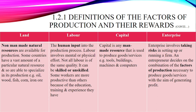Capital refers to man-made resources used to produce further goods and services. Examples include buildings, machines, and computers. Buildings can be used for new production processes, machines assist in producing other things, and computers — developed by humans — help calculate and manage further production.